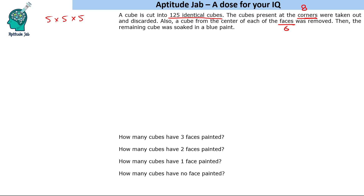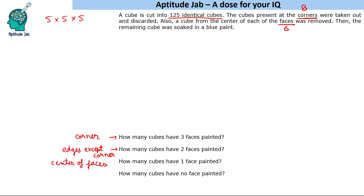The first question is: how many cubes have 3 faces painted after this process? Originally, corner cubes have 3 faces painted. Cubes with 2 faces painted are along the edges, except at the corners or vertices. Cubes with 1 face painted are at the center of faces. Cubes with no face painted are the internal cubes.